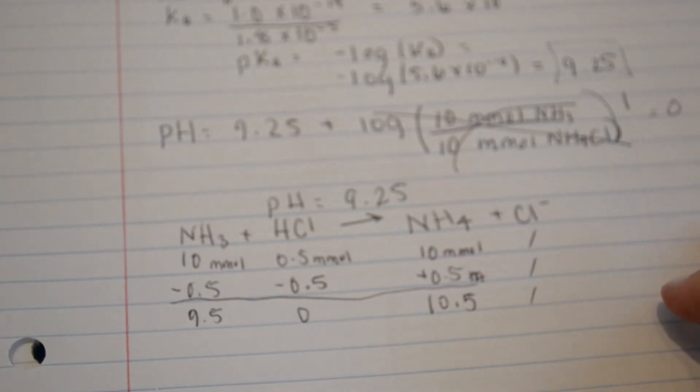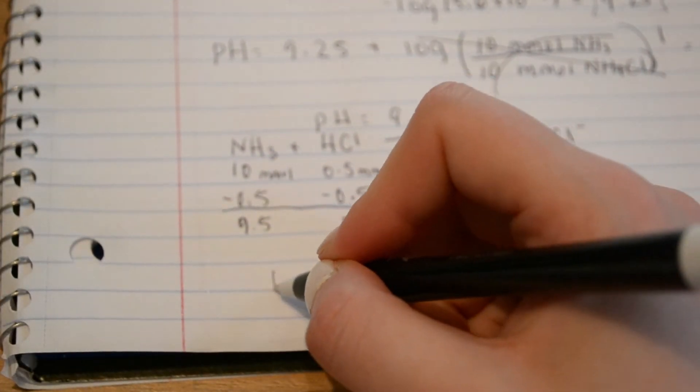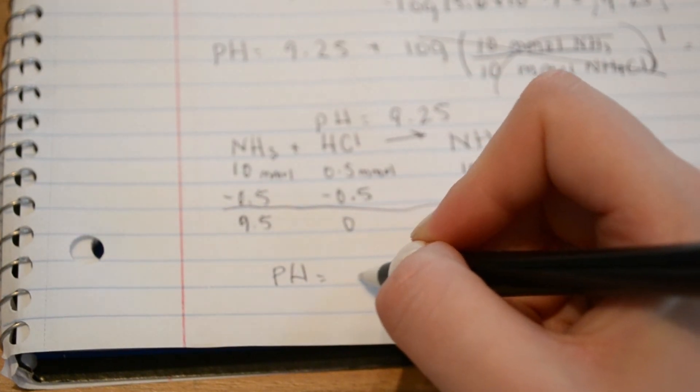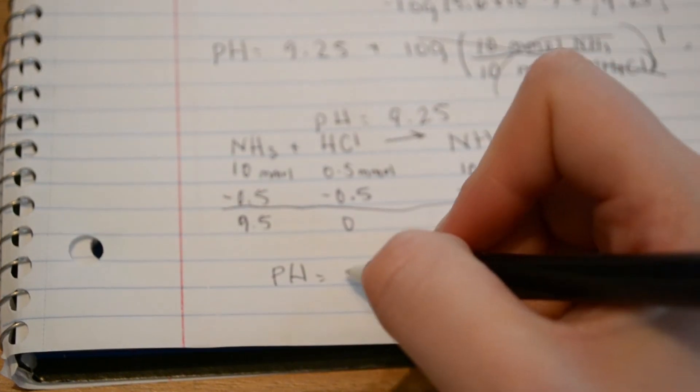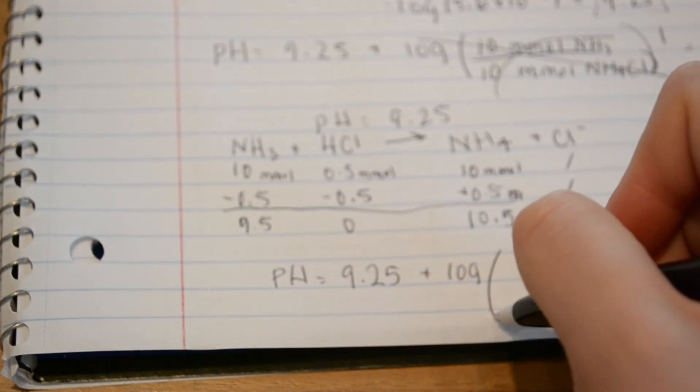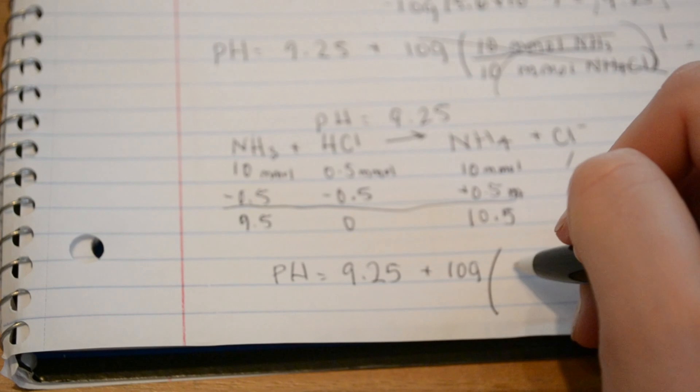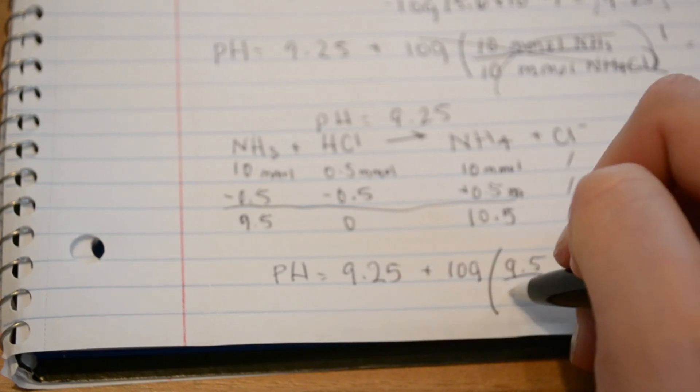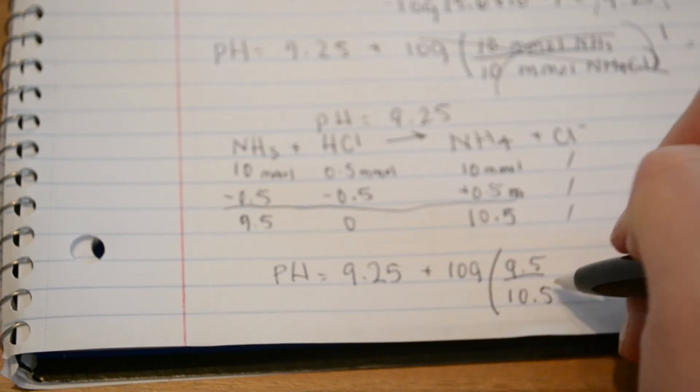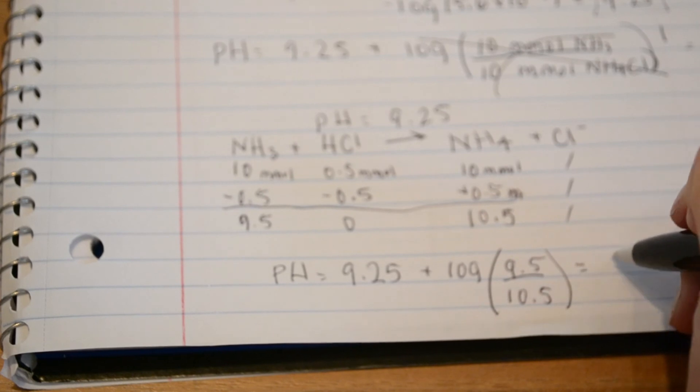We'll use the Henderson-Hasselbalch equation once again. pH equals pKa from earlier, which is 9.25, plus log of base over the acid. We have 9.5 over 10.5. Once you do all the math, you get 9.21.